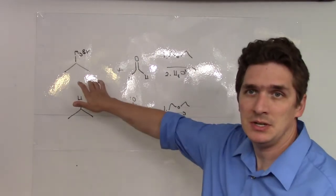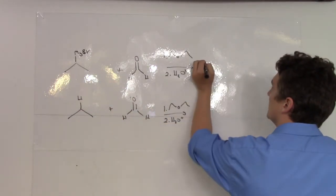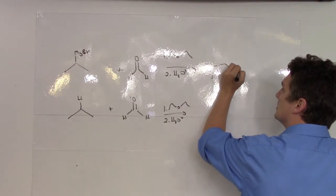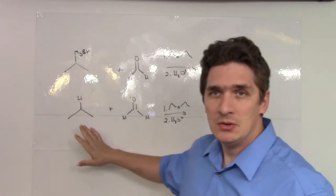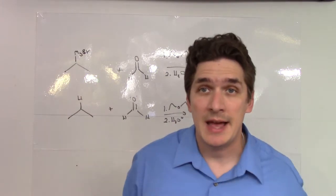What's going to happen? Well, the Grignard here, you should be able to predict, is going to form primary alcohol. The organo-lithium, in this case, is going to do the exact same reaction.